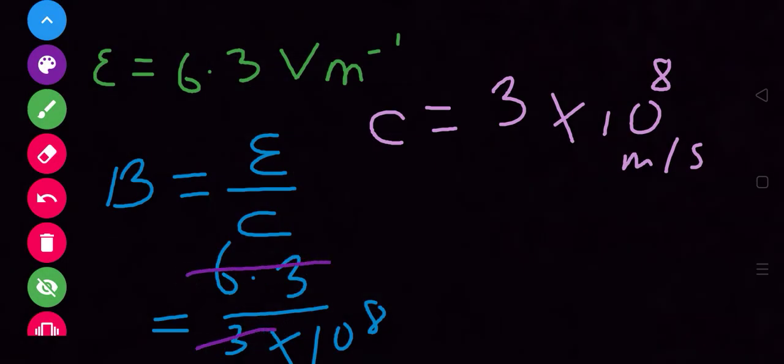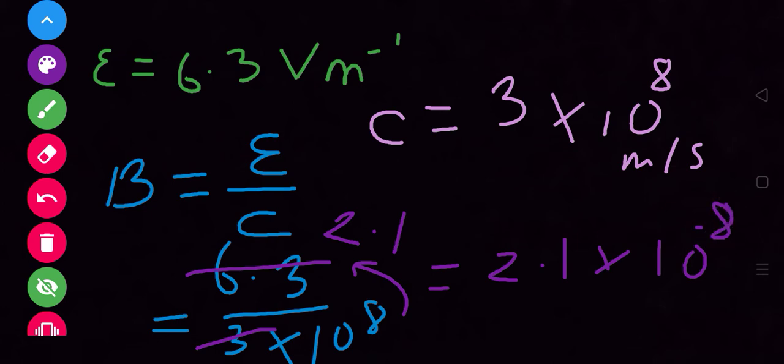Dividing 6.3 by 3 gives us 2.1, so we get 2.1 × 10^-8. This is the required magnetic field, and it oscillates along the z direction. The direction of propagation of the electromagnetic wave is along x, the electric field oscillates along y, so the magnetic field must be along the z direction.